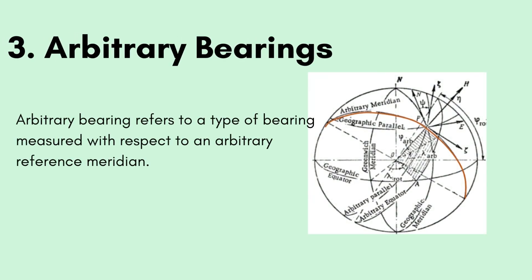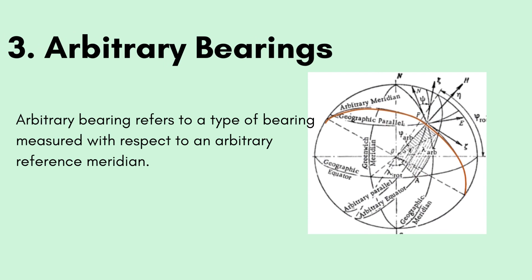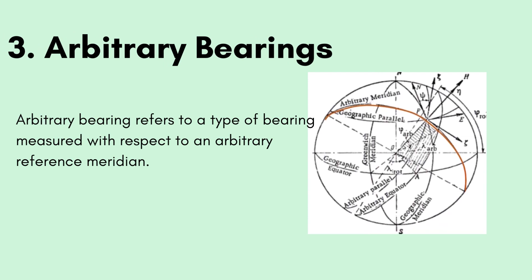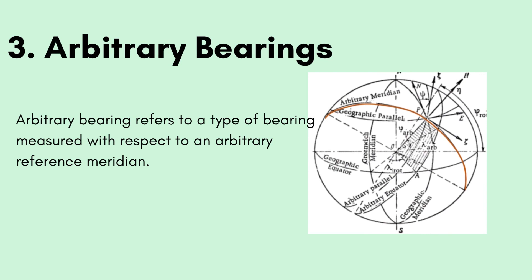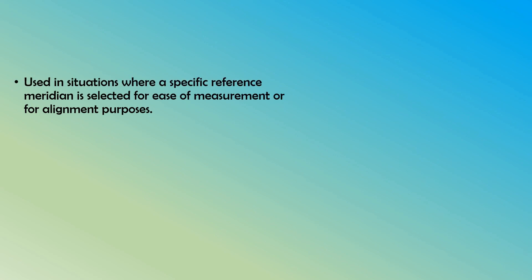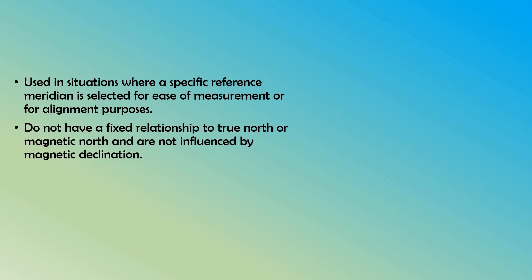Number three is arbitrary bearings. Arbitrary bearings refers to a type of bearing measured with respect to an arbitrary reference meridian. Unlike true bearings measured from the true meridian or magnetic bearings measured from the magnetic meridian, arbitrary bearings are based on a chosen reference meridian that is convenient or specific to a particular surveying project. It is important to note that arbitrary bearings do not have a fixed relationship to the true north or the magnetic north and are not influenced by magnetic declination.